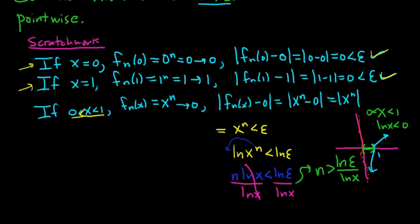Now we need to find a positive integer greater than ln(epsilon)/ln(x). We can do that using the Archimedean property, which says that for any real number, you can always find a natural number that's bigger. So we'll choose big N to be larger than ln(epsilon)/ln(x) using the Archimedean property. Now let's go through the proof carefully.